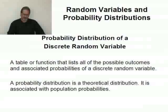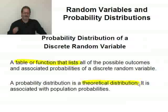Now, a probability distribution for discrete random variable is actually a table or a function that lists all the possible outcomes, everything that can happen, and along with it, the associated probability, the probability of it happening. A probability distribution is actually a theoretical distribution. This is what should happen in theory, and it's proven mathematically. It's not the result of actually conducting an experiment. That would be empirical. This is theoretical.